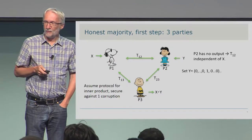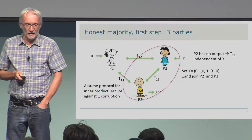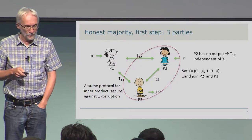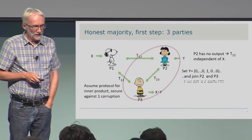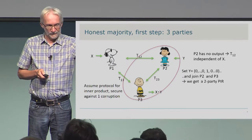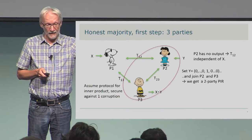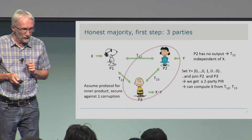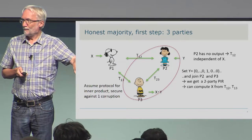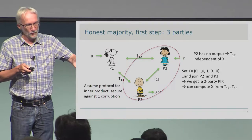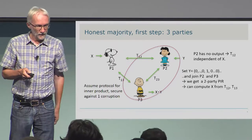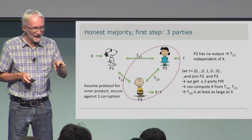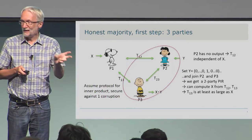This means we can construct a two-party PIR protocol by gluing those two parties together as the client. Snoopy is still the server with input X, and these two parties together learn the i-th bit of X. From the two-party PIR fact, the client can compute all of X from the transcript T_{1,2} and T_{1,3}. However, T_{1,2} is independent of X. So bringing in T_{1,3} suddenly gives you all of X — meaning T_{1,3} must have contained enough information to determine X, so it must be at least as large as X. The takeaway is: the party who gets the output must communicate a lot.